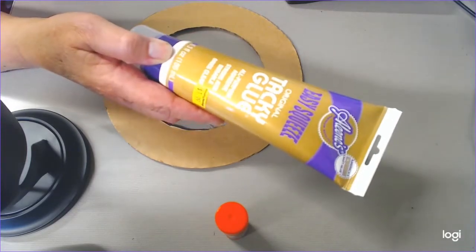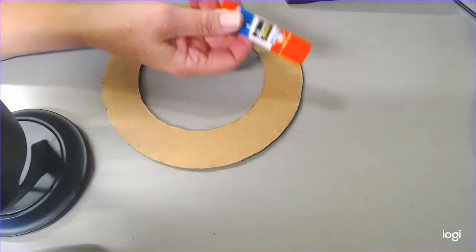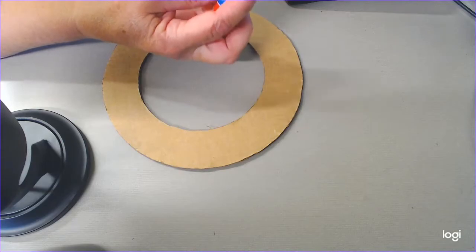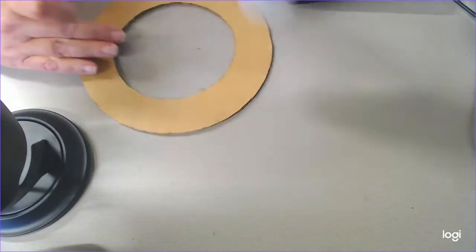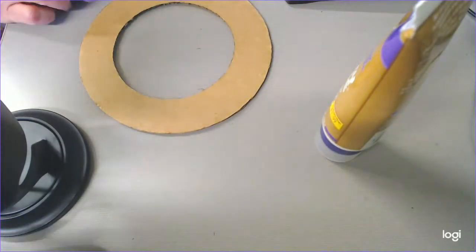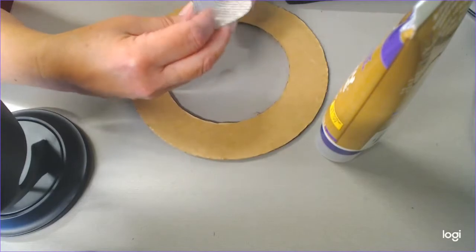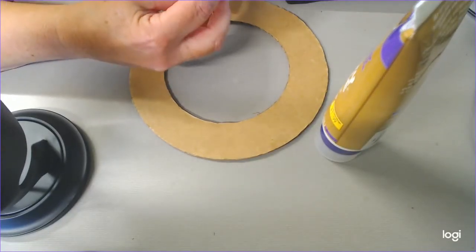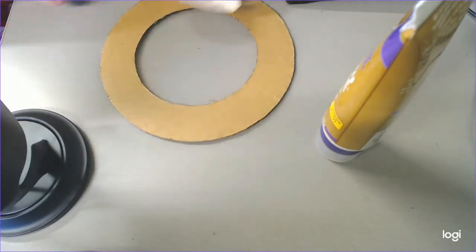I also have an Elmer's stick, so it doesn't matter what kind of glue you use. You're just going to be placing it around the outside of the cardboard ring. What I do is I take the petal and if you like, you can bend it just to give it a little bit more form.